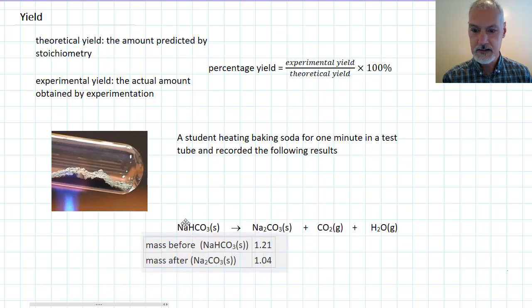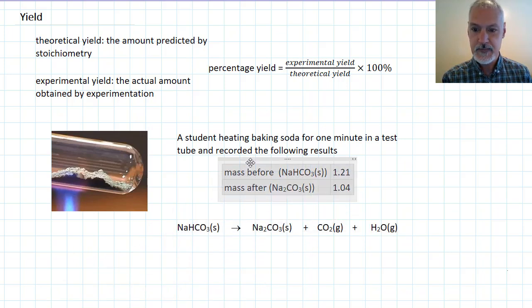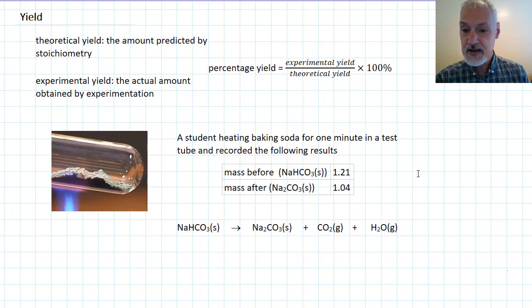Here's the data that they recorded. The mass of baking soda that was added was 1.21 grams, and the mass after the experiment, which the student assumes to be the sodium carbonate, 1.04 grams. Let's take a look at what one of these numbers now represents. This value here is the actual amount obtained in my experiment. So I can use this for my experimental yield.